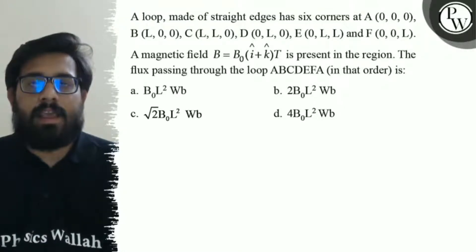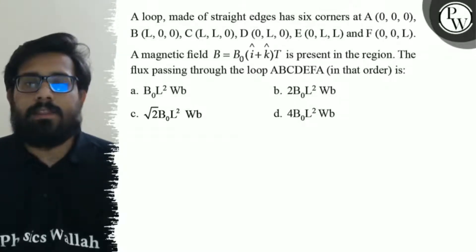A loop made of straight edge has six corners at A, B, C, D, E, and F.